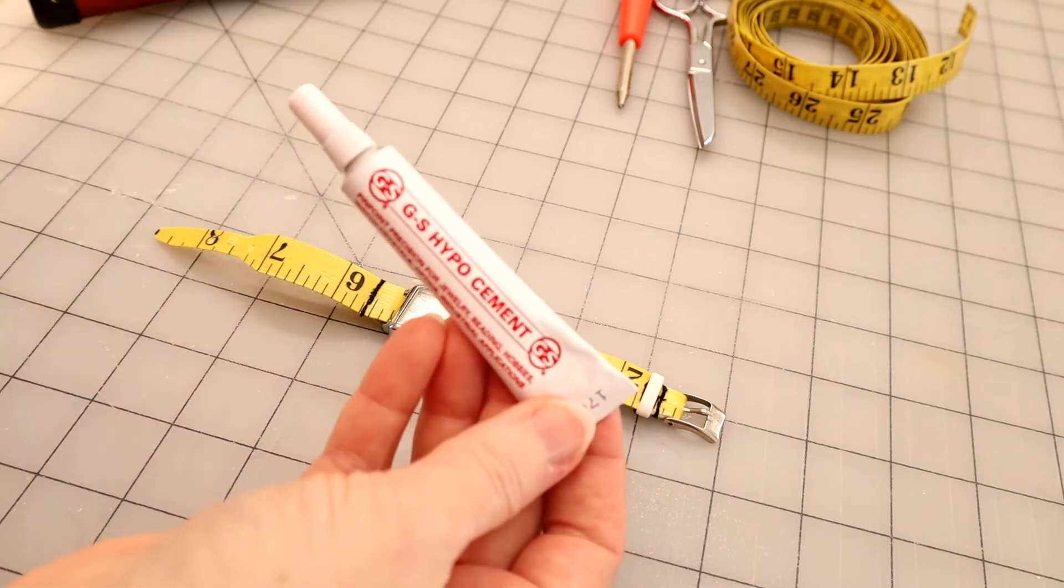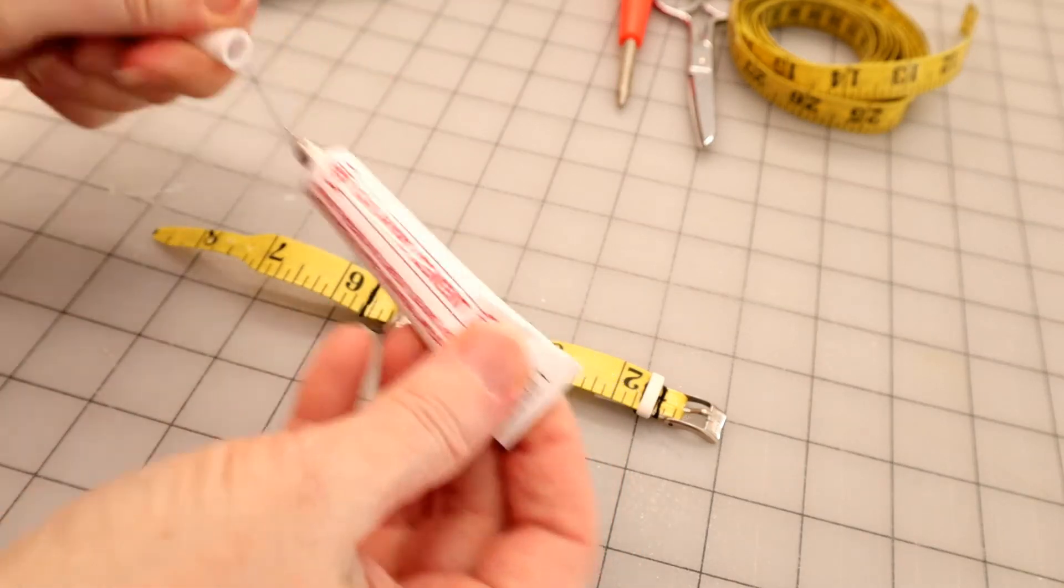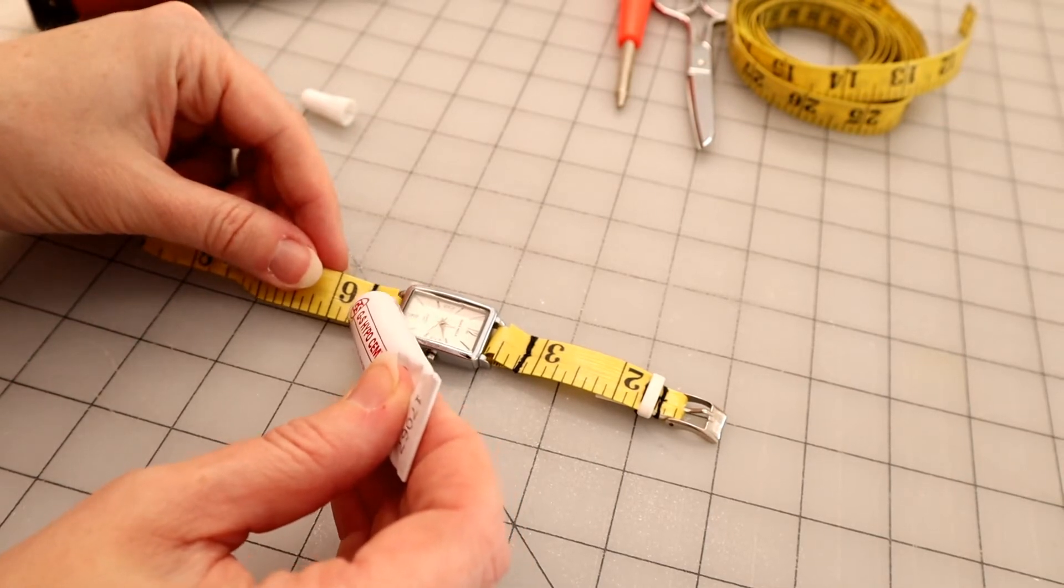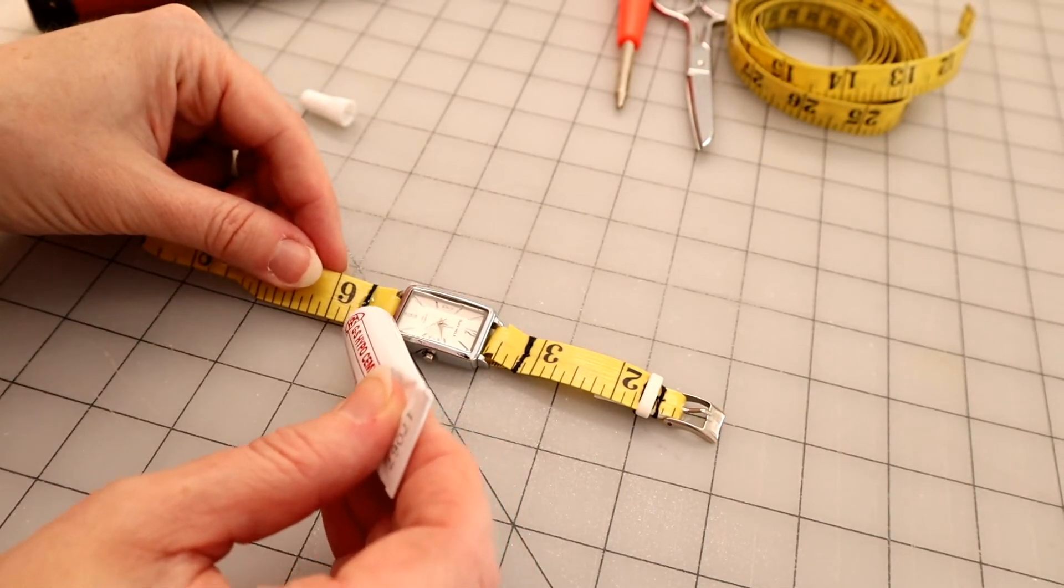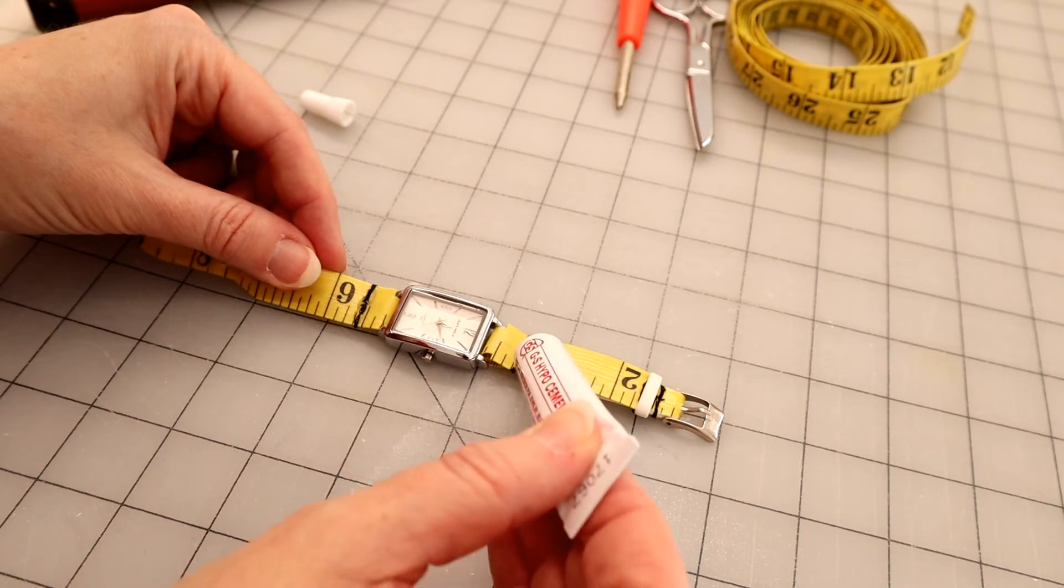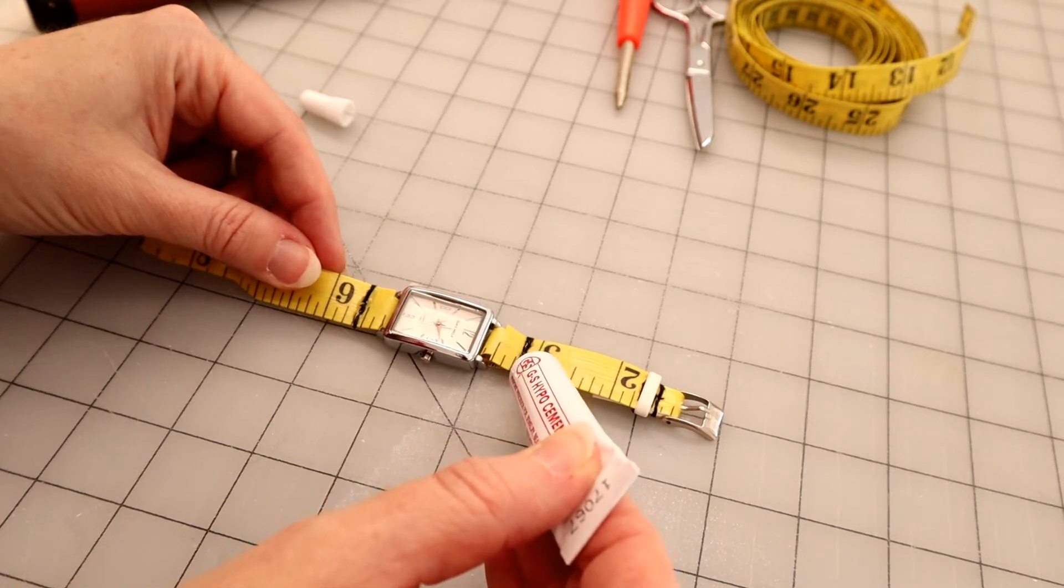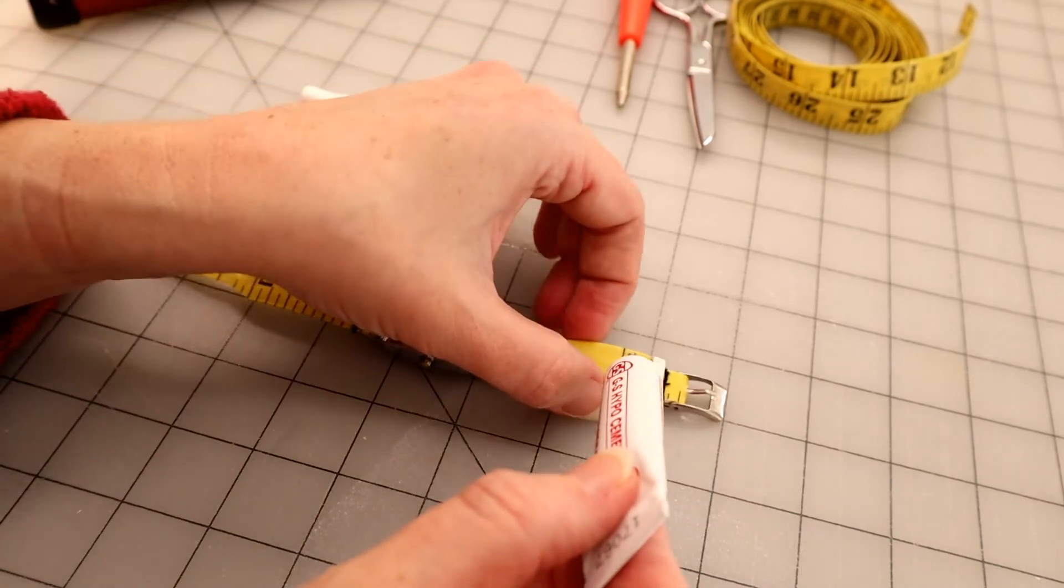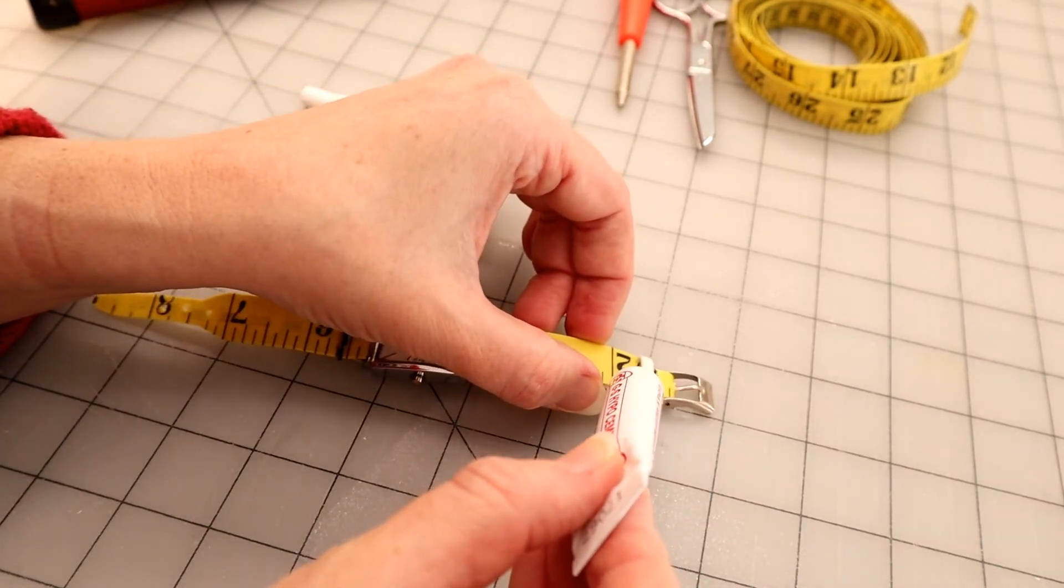Now I'm going to seal the threads. There's two reasons. One, I don't want them to fray, and the other one is I don't want them to get nasty. So this is going to help waterproof them just a little bit so they stay cleaner. I'm just going to run a bead of this hypo cement across each of the stitch lengths, and then I'm just going to dab away any excess.